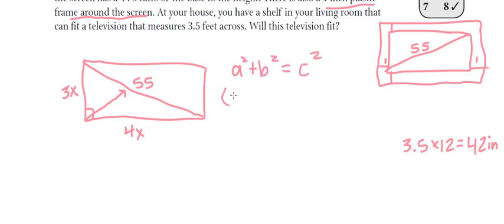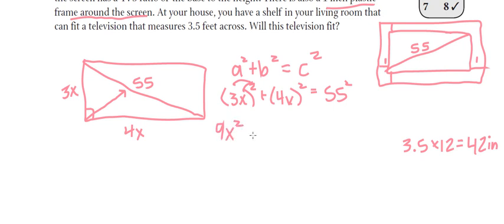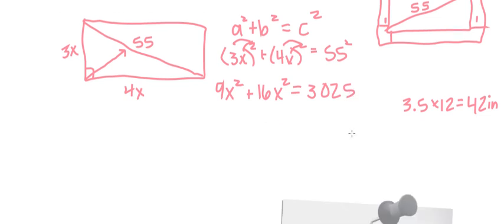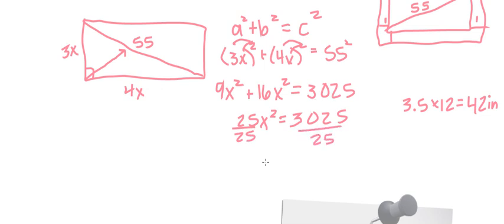So a² + b² = c², which gives us (3x)² + (4x)² = 55². When we square these quantities, we square both the coefficient and the variable: 9x² + 16x² = 3,025. Combining like terms, 25x² = 3,025. Dividing by 25 gives x² = 121. Taking the square root, x = 11.